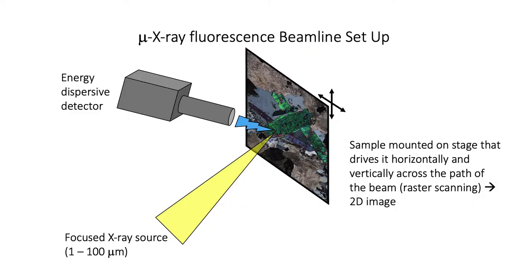At a micro x-ray fluorescence beamline, the sample is mounted on a stage that drives horizontally and vertically across the path of a focused x-ray beam. This method of measurement is called raster scanning, where the beam stays fixed in place and the sample is scanned across it in order to generate a two-dimensional image. When the focused x-ray beam hits the sample, it causes the elements in that sample to fluoresce, which is then measured by the energy dispersive detector.